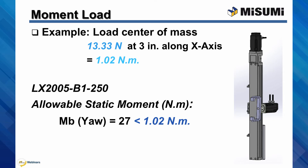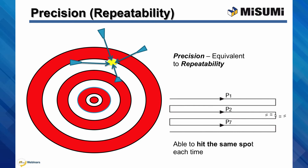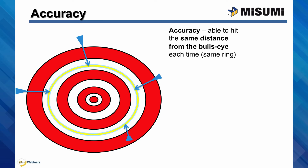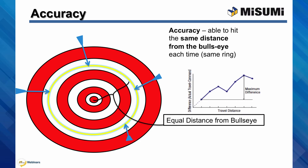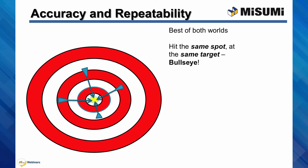In order to understand the next requirements, I'll briefly explain the difference between precision, or repeatability, and accuracy. Precision, or repeatability, is the ability to hit the same spot each time. The actual position may not be the same as the commanded position; however, each consecutive motion will be in approximately the same location relative to the previous position. Accuracy is the ability to hit within the same distance from the commanded position each time — like hitting the same ring from a bullseye on a target.